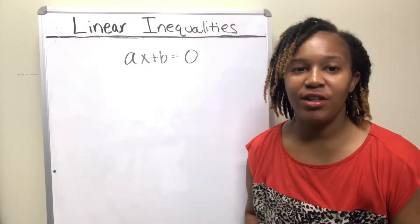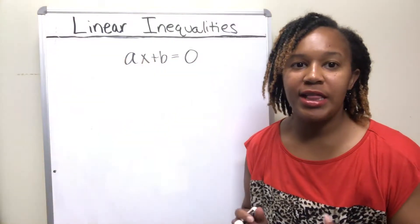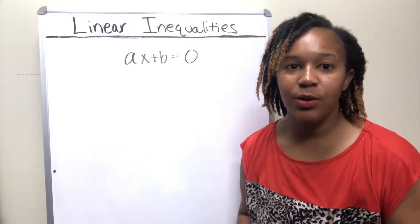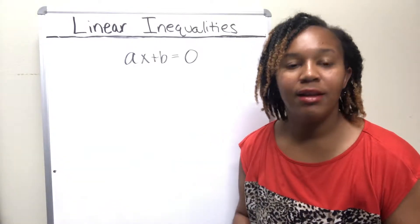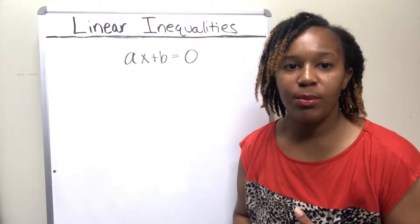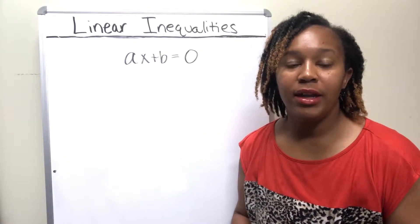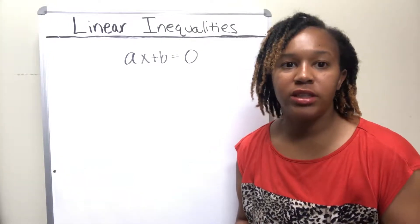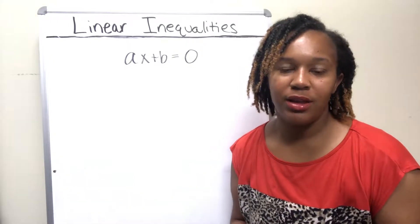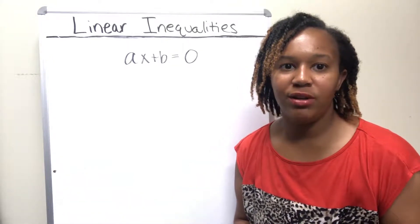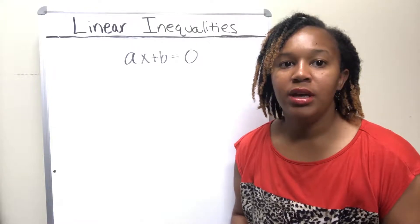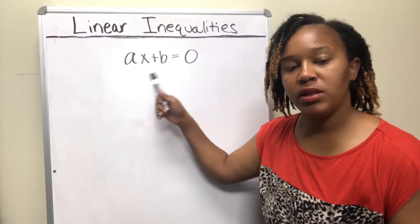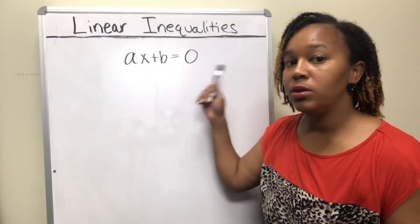Recall from an earlier video that a linear equation is an equation that has an equal sign, one variable, and the highest exponent on the variable is one, which we actually don't write on the variable. So a linear equation is something of this form: ax plus b equals zero.